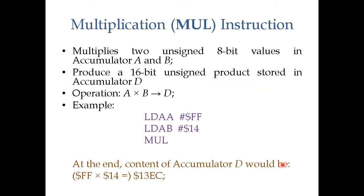Let's try multiplication first. For multiplication, we just have one single instruction, which is MUL. It actually multiplies accumulator A and accumulator B as unsigned numbers. In general, all the numbers you have in digital systems and computers, unless otherwise mentioned, are signed numbers, meaning represented as signed. But when we do multiplication using this instruction, it actually treats everything as unsigned, so the most significant bit on the left side of A or B is not considered as a sign bit.